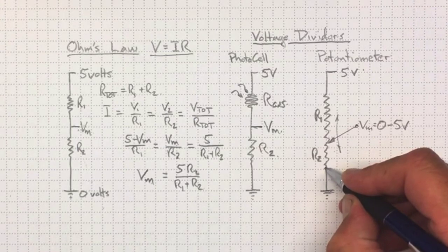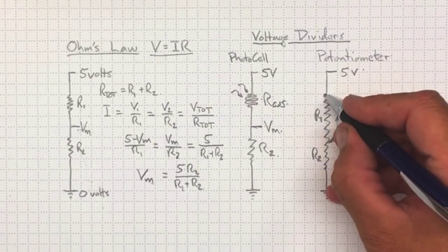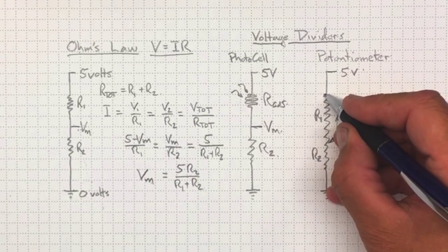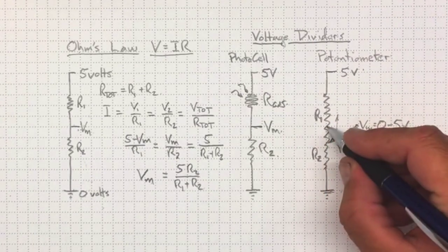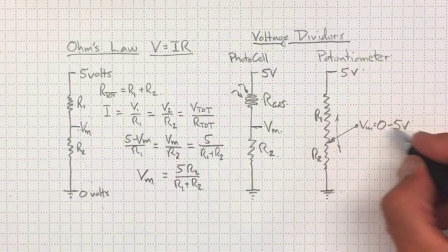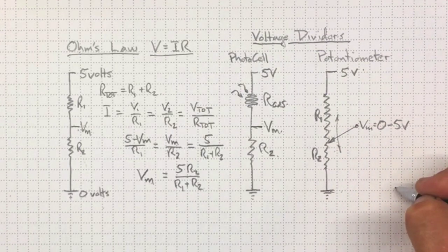Because basically we're going from down here, where R1 is huge and R2 is zero, up to here, where R2 is huge and R1 is zero. So anywhere in between, if we were halfway in between, we'd wind up with two and a half volts there.